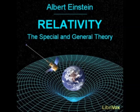It is a veritable wonder that we can carry out this business without getting into the greatest difficulties. We only need to think of the following. If, at any moment, three squares meet at a corner, then two sides of the fourth square are already laid, and as a consequence, the arrangement of the remaining two sides of the square is already completely determined. But I am now no longer able to adjust the quadrilateral so that its diagonals may be equal. If they are equal of their own accord, then this is in a special favor of the marble slab and of the little rods about which I can only be thankfully surprised.